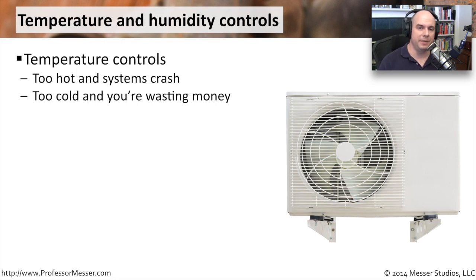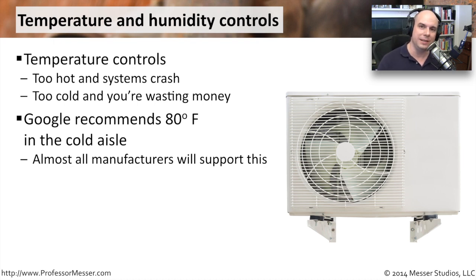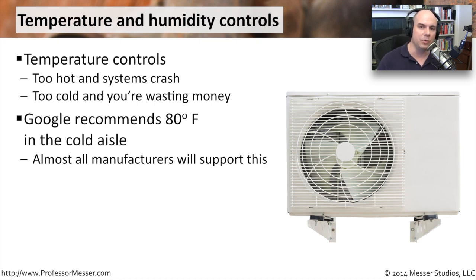Temperature and humidity in a data center is a bit of a challenge. If things get too hot, your systems are going to crash. If things get too cold, you're wasting money on your cooling system, so there has to be a balance. Many data centers are very cold, but recommendations from organizations like Google — which operates many data centers — suggest 80 degrees in your cold aisle. That's kind of warm, but if you look at manufacturer specifications for most servers and their components, 80 degrees is just fine and will work optimally.